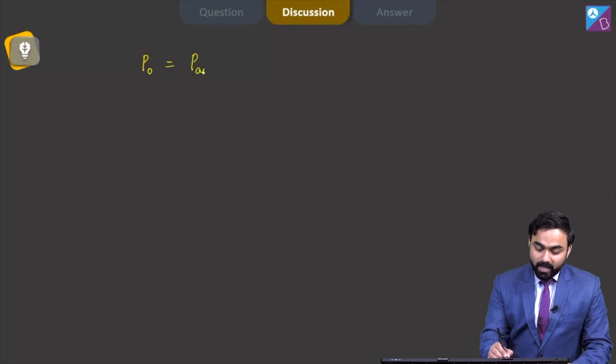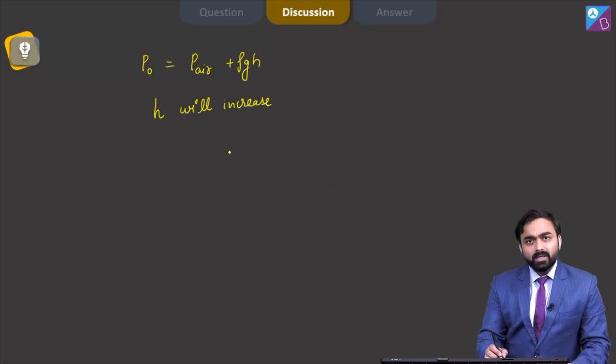P₀ = P_air + ρgh, the value of h will increase.